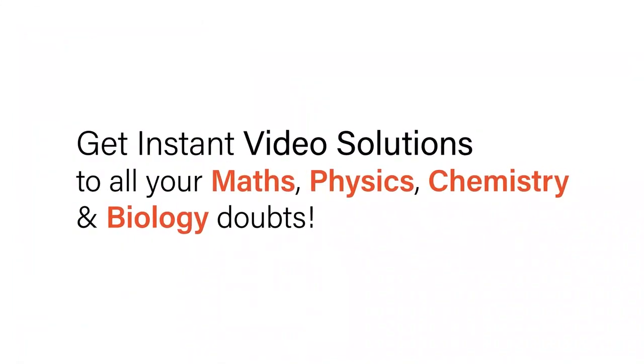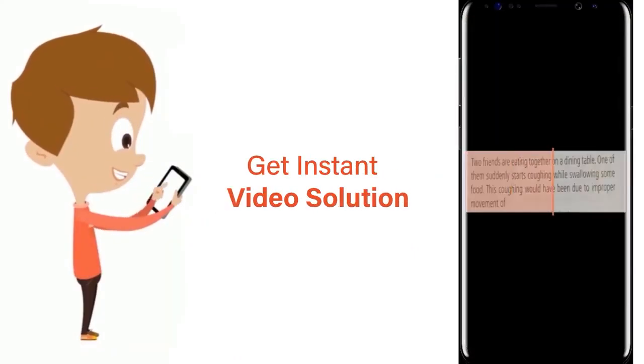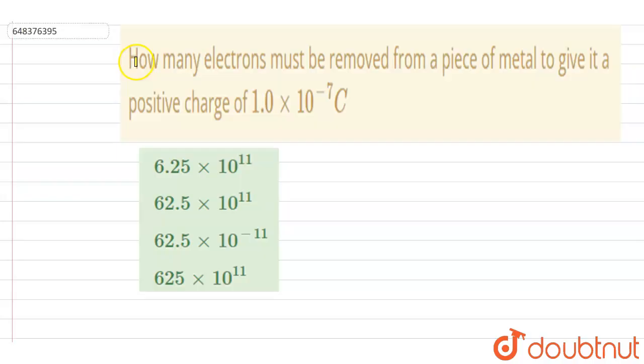With Doubtnet, get instant video solutions to all your maths, physics, chemistry, and biology doubts. Just click the image of the question, crop the question, and get instant video solution. Download Doubtnet app today. Hello everyone, how many electrons must be removed from a piece of metal to give a positive charge of 10 to the power of minus 7